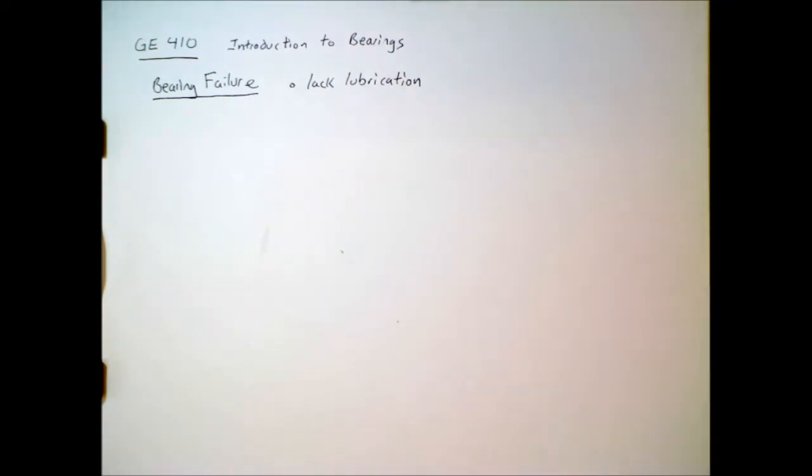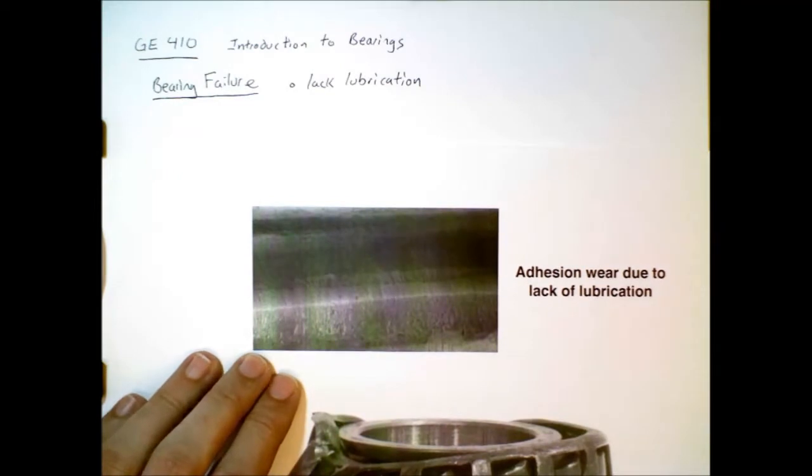For example, if a transmission runs out of transmission fluid that lubricates the bearings, this is something that can happen. So if we look at the small scale here, this is a bearing surface.